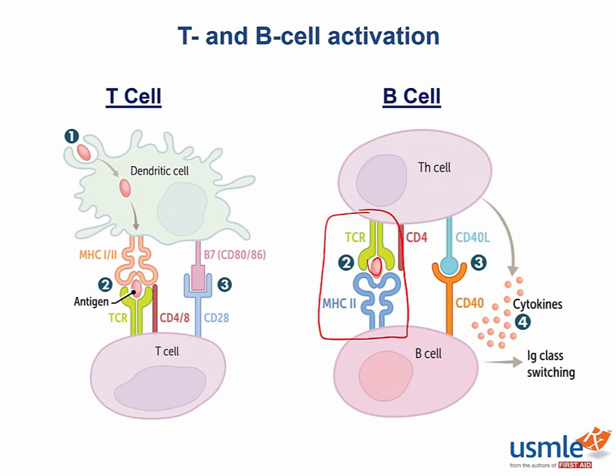The interaction between CD40 receptor on the B cells and the CD40 ligand on the T helper cells is signal number 2. Once this second signal has been received, the T cells secrete cytokines that will determine the antibody isotype to which B cells switch, such as IgE, IgA, and IgG.